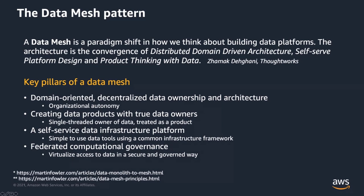The fourth pillar is federated computational governance — the ability to virtualize access to data in a secure and governed way. Each line of business offering data as a product needs to do so securely, without reinventing the wheel each time. There needs to be consistency so that when users access data, they can bring whatever tool they want, but we have consistent enforcement of security, governance, auditing, and lineage across the organization — because if something happens, the organization needs to respond quickly.